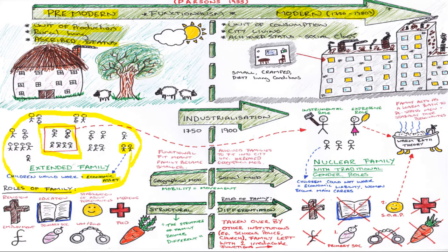Within this style of family life, the family provided all the roles. They were the source of religious information, provided education for the children, stabilized the adult personalities, provided health care and medicine, all the food was grown on the farm, and law and order was enforced through the family. They provided primary socialisation, and the home and family was your source of employment. This is how the family worked in the pre-modern time.